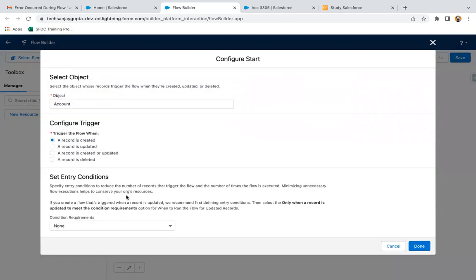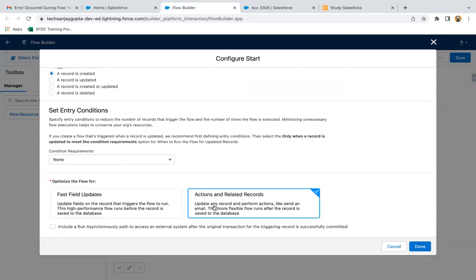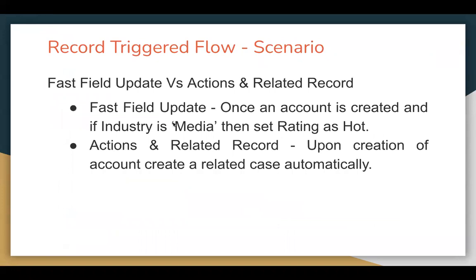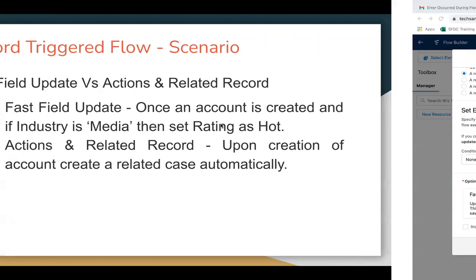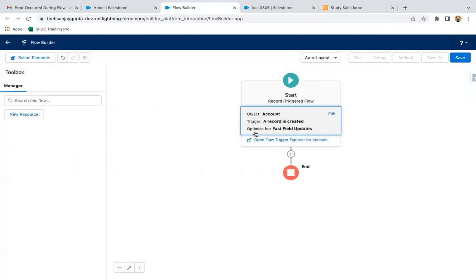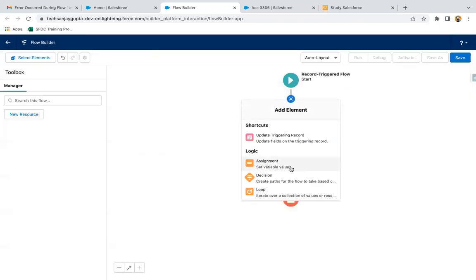With the help of an example, we will see the differences between Fast Field Update and Actions and Related Records. If you want to create any account record from the UI and on that account record, industry is media, then you want to set rating as hot — this type of requirement you can do with Fast Field Update, because you just need to update the record through which the record trigger flow will be triggered. You don't need to perform any actions or do anything with a related record. So I am choosing Fast Field Update, clicking on done, and clicking on plus to add the update triggering record element.